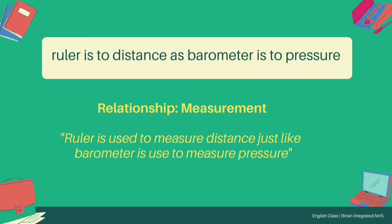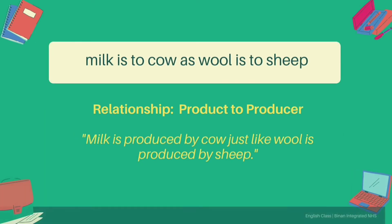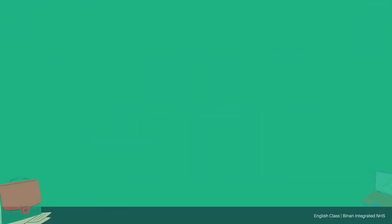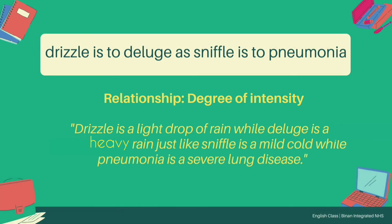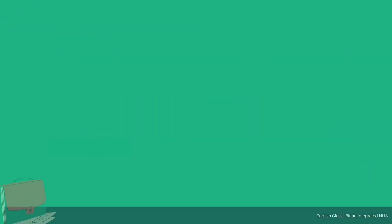Ruler is to Distance as Barometer is to Pressure. Relationship: measurement. A Ruler is used to measure Distance, just like a Barometer is used to measure Pressure. Milk is to Cow as Wolf is to Sheep. Relationship: product to producer. Milk is produced by a Cow, just like wool is produced by a Sheep. Drizzle is to Deluge as Sniffle is to Pneumonia. Relationship: degree of intensity. Drizzle is a light drop of rain while Deluge is an overflowing rain, just like Sniffle is a mild cold while Pneumonia is a severe lung disease.